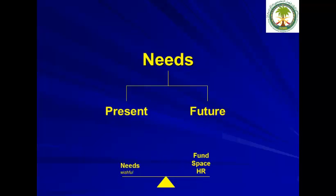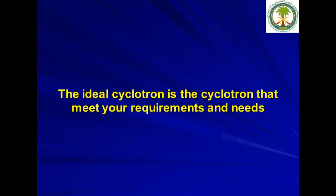So what are the needs? You have to consider the present needs and the future needs, and your needs should not be based on wishful thinking. You have to balance your needs with the funds available, the space allocated for your cyclotron project, and the human resources available to operate your system. The ideal cyclotron is the one that meets your requirements — whether it's 10 MeV or 30 MeV, it's based on your current and future needs.